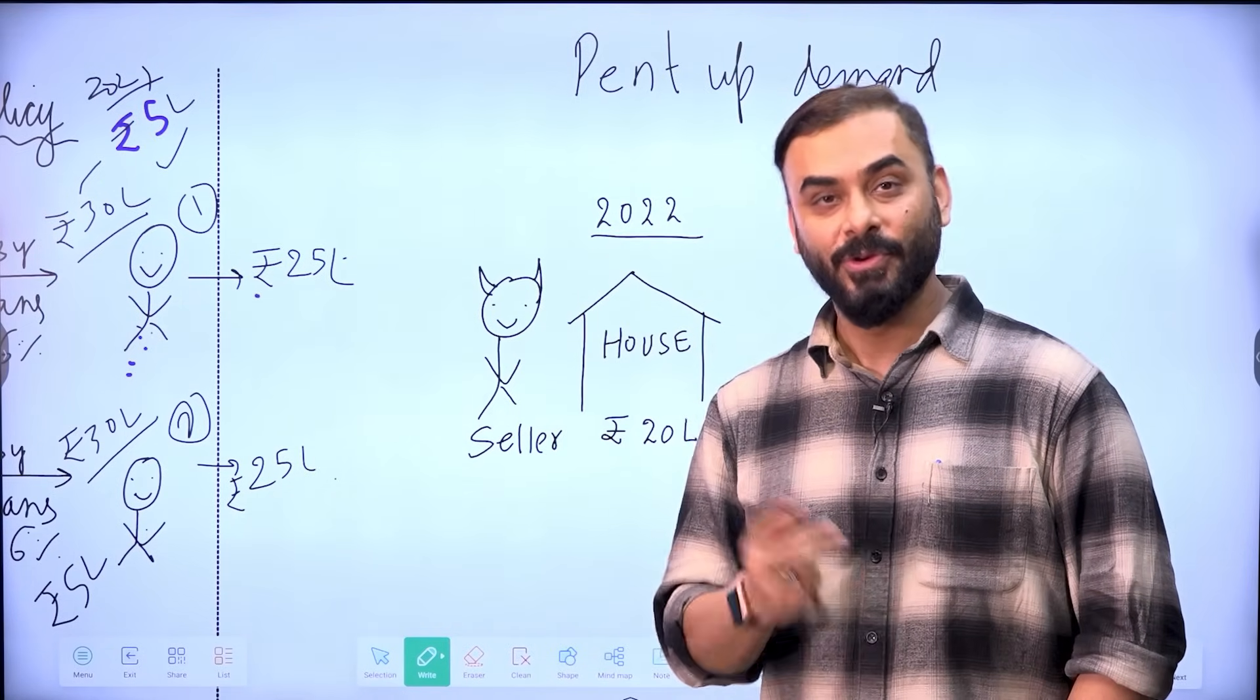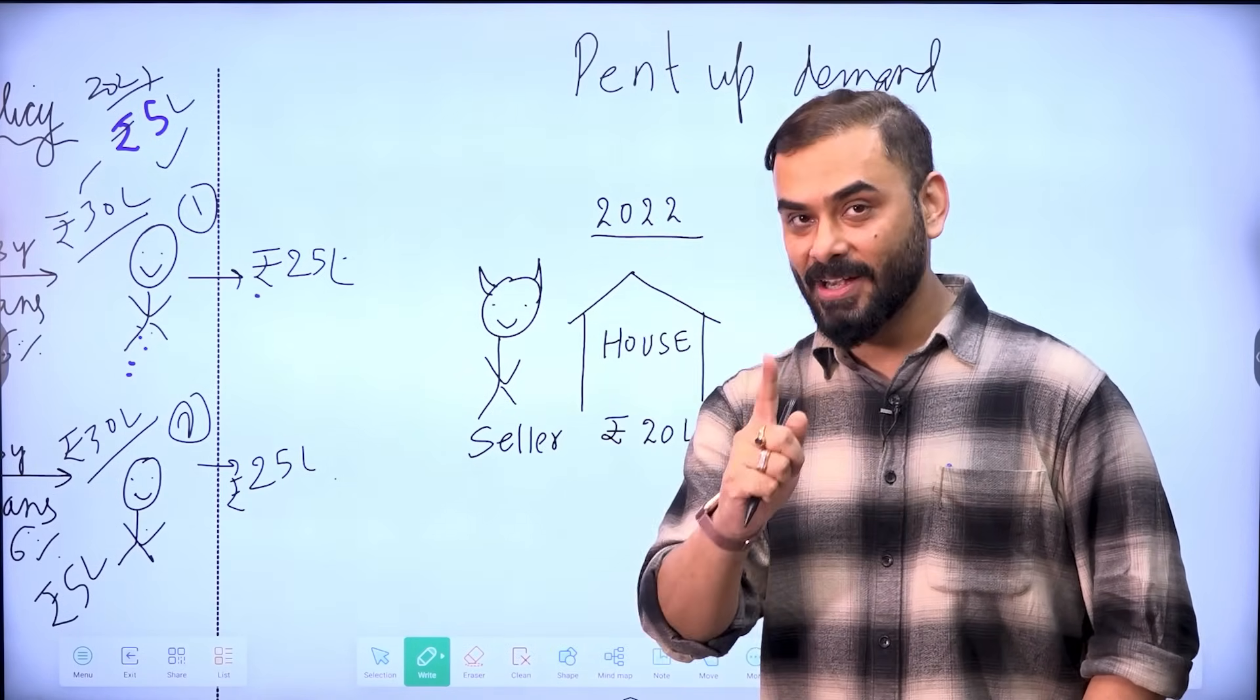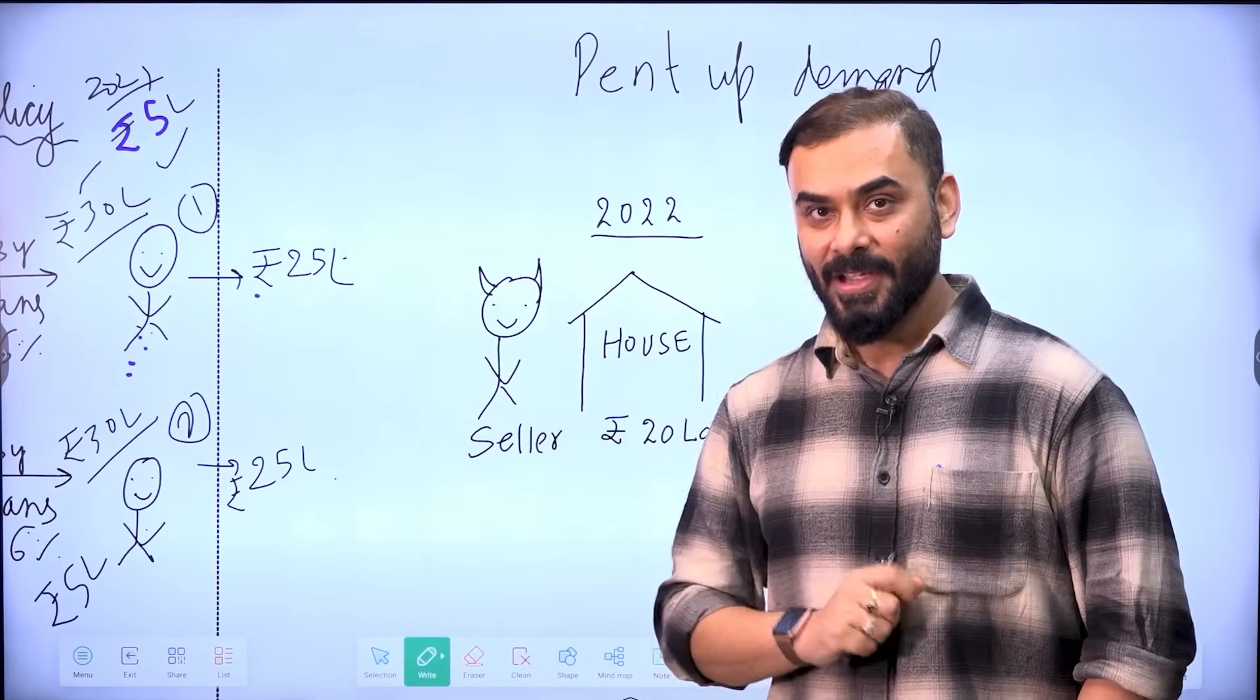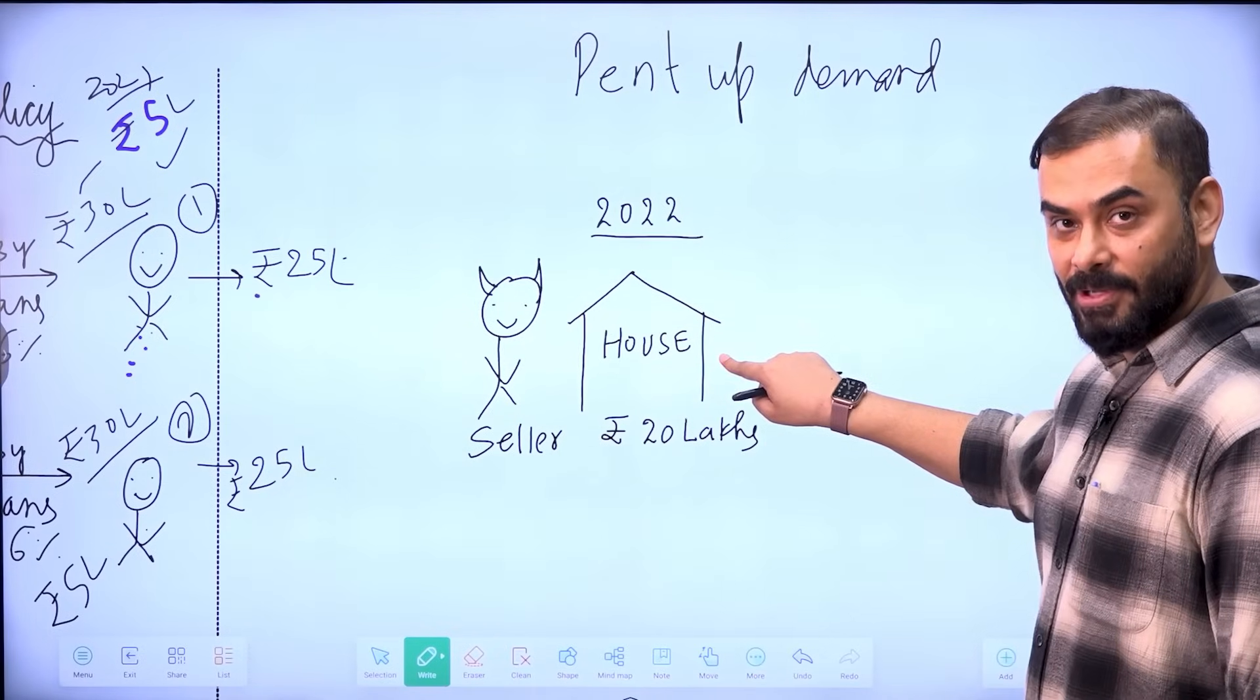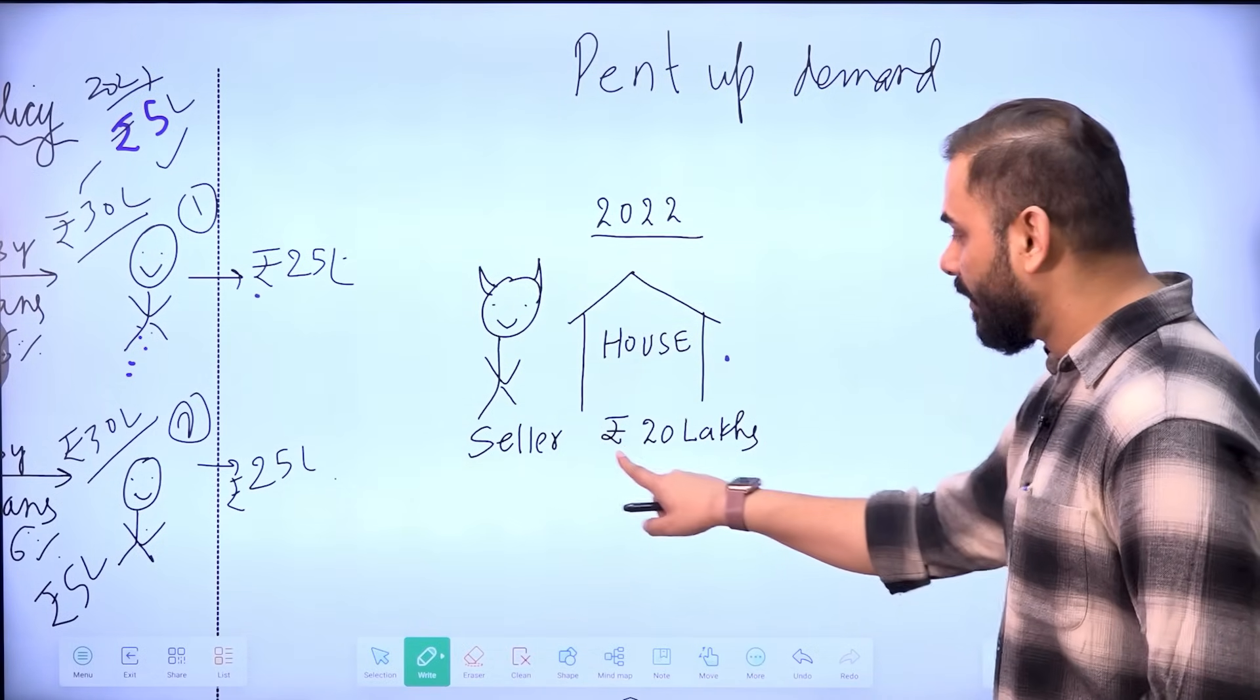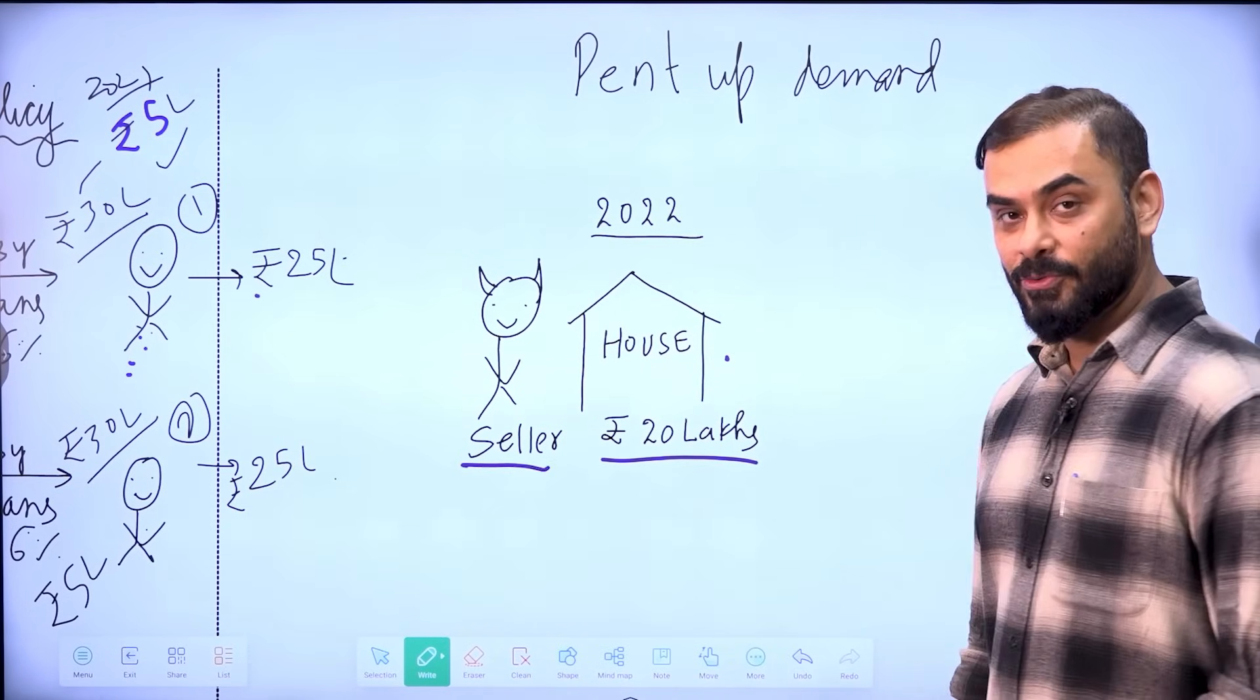This person also says, I want to buy a house. So demand of house increased. But you understand that construction of house takes time. And during COVID, construction of house was very slow. So there is only one house available 2020 post COVID. Price of the house 20 lakh rupees. And this is the seller of the house.